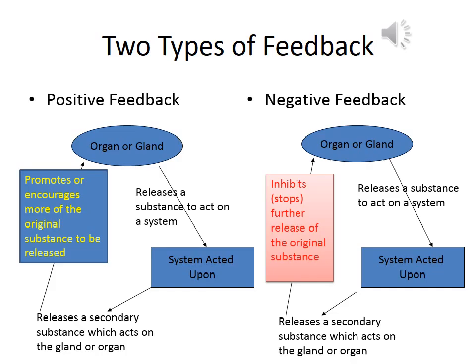In positive feedback, the organ releases a substance that acts on a system. The system acted upon releases a secondary substance which acts on the gland or the organ, promoting or encouraging the original substance being released even more. When you look at the two types of feedback, negative feedback inhibits further production of the primary substance using the secondary substance. In positive feedback, the secondary substance promotes further production of the primary substance. That sets a big difference between them. Everything else is the same except what the secondary substance causes the organ or the gland to do.